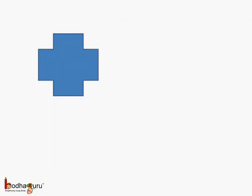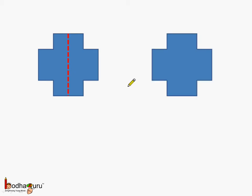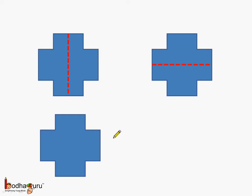Now, coming to this figure, how many lines of symmetry does it have? Let us see. First, if we draw a vertical line this way, these two are identical halves. Now let us try the other way — the horizontal way. Here again, the upper and lower parts are identical halves.